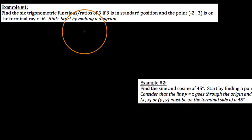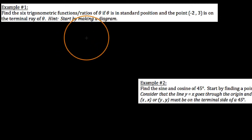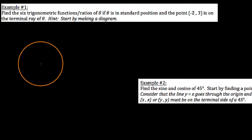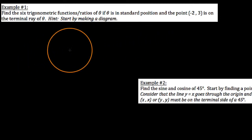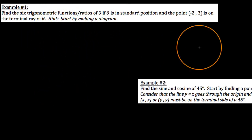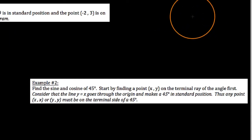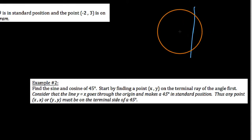In my last video we redefined how to find the six trig ratios of a given angle theta in general, so long as it's sketched in standard position and we have a point on the terminal side. In this video we're going to put that definition to use. So really quickly, I just want to recap.